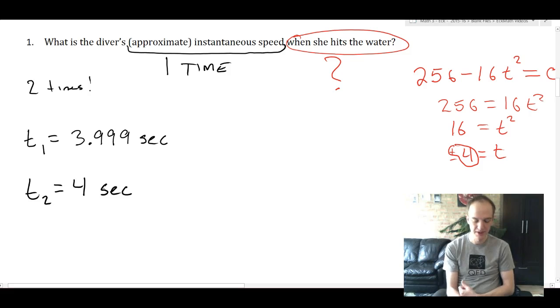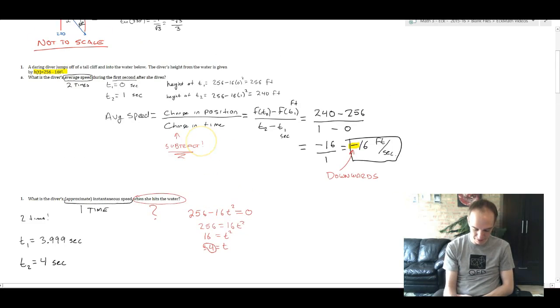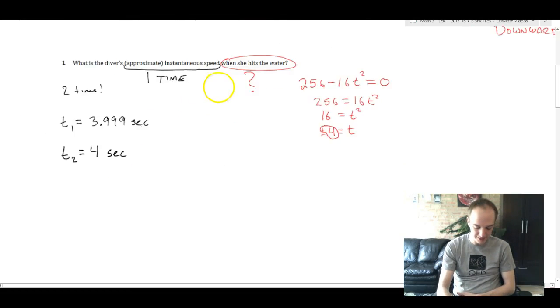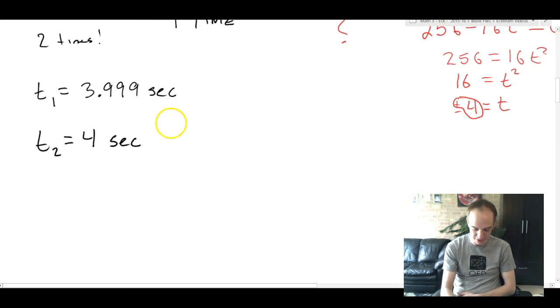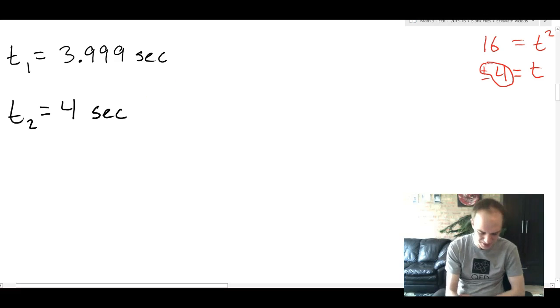We're going to duplicate the calculation that we did in the first problem, where we used change in position over change in time, and did this thing we call the difference quotient, and got an answer. We're going to do the same thing with this time 1 and time 2 that just have a little bit grosser of decimals. And that's all we're going to do.